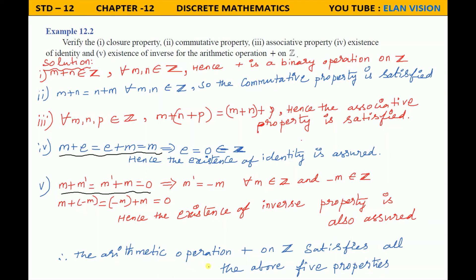Therefore, the arithmetic operation plus on Z satisfies all the above 5 properties: Closure property — 2 elements check; Commutative property — 2 elements check; Associative property — 3 elements check; Identity property — 1 element check, answer is 0; Inverse property — 1 element check, answer is the identity element's negative.